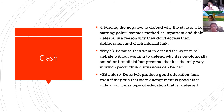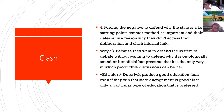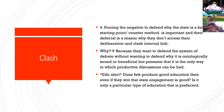Let's live in a world where clash is the internal link to something like procedural fairness, portable skills, or education. That would mean: how does the affirmative allow or engage the negative? What does the affirmative allow for the negative to say? That is where this starts from. Forcing the negative to defend why the state is a key starting point or counter method is important. The deferral — the negative just saying the state is good because the state is good — reading framework as a reason why they don't access deliberation and clash internally, is problematic.